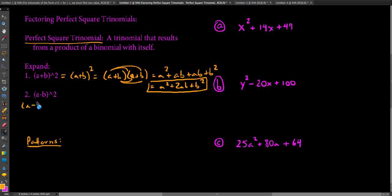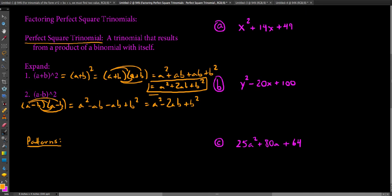The same thing applies if we have a minus b in a product with itself. Squaring a minus b also produces a perfect square trinomial. The only difference is we get a squared minus ab minus ab plus b squared, which gives us a squared minus 2ab plus b squared — our other perfect square trinomial, where we're squaring a binomial that's a difference.